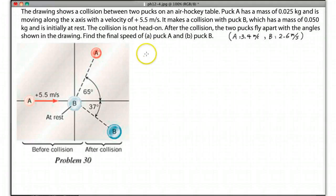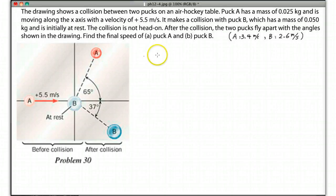For this question, since there's a collision on an air hockey table, friction can be ignored. So you can treat this two-puck system as an isolated system. Before and after the collision, the total momentum should be conserved — it should be the same.